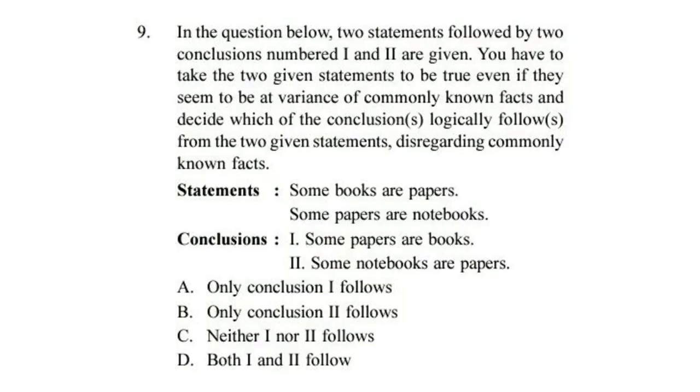Question 9. In the question below, two statements followed by two conclusions numbered 1 and 2 are given. You have to take the two given statements to be true even if they seem to be at variance of commonly known facts and decide which of the conclusions logically follow from the two given statements disregarding commonly known facts. Statements: Some books are papers. Some papers are notebooks. Conclusions: Some papers are books. Some notebooks are papers. Correct answer is option D. Both 1 and 2 follow.